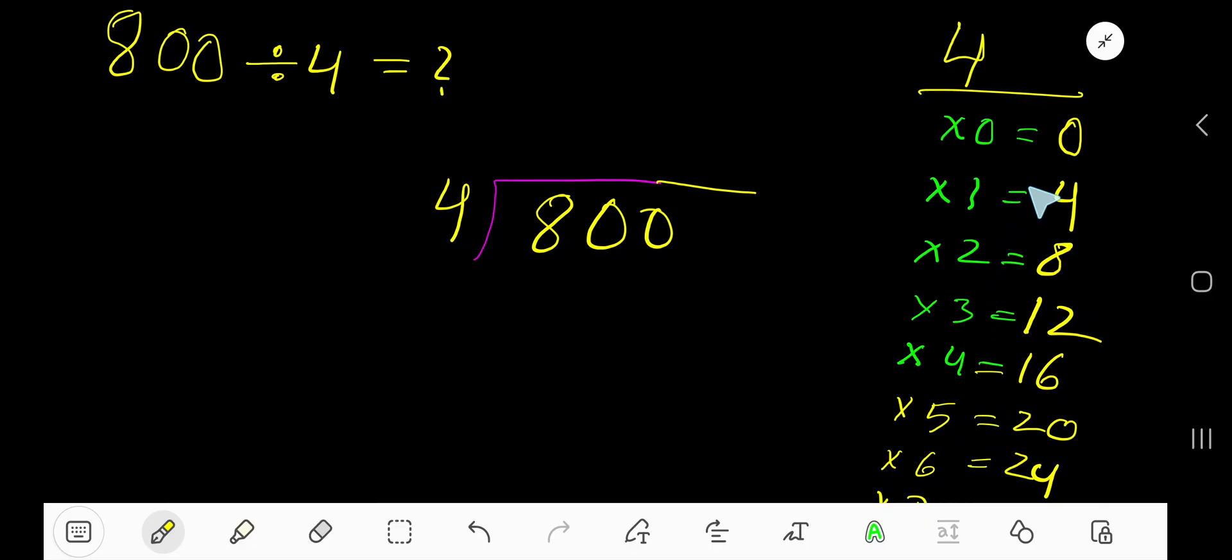To find out the multiplication table of 4 easily you need to add 4 with the previous step. 0 plus 4, 4. 4 plus 4, 8. 8 plus 4, 12. 12 plus 4, 16. 16 plus 4, 20. 20 plus 4, 24.